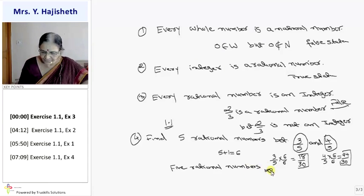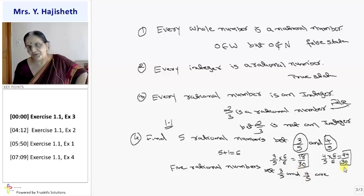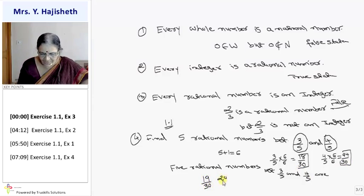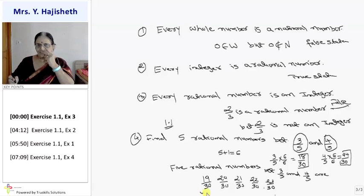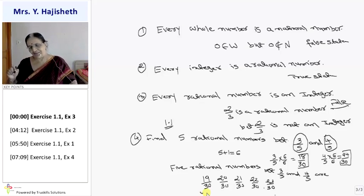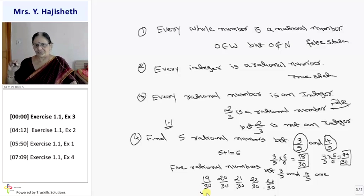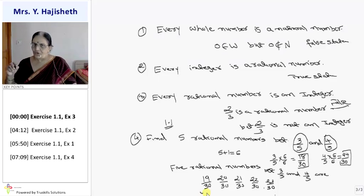Between 3 by 5 and 4 by 5, that is between 18 by 30 and 24 by 30, I start with 19 by 30, 20 by 30, 21 by 30, 22 by 30, and 23 by 30. In one step we can find as many rationals as we want between two rational numbers. To get 5, we rationalize both numerator and denominator of the given rational numbers by 6.